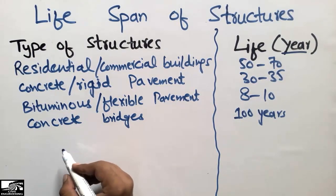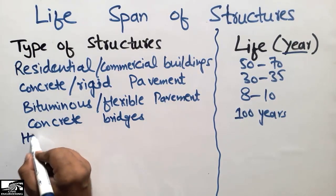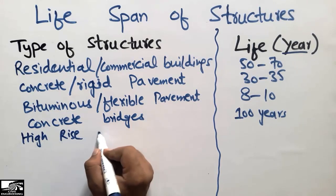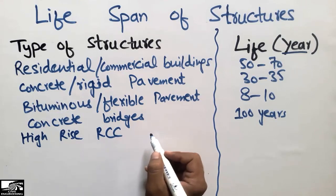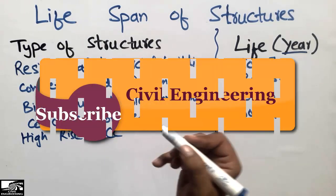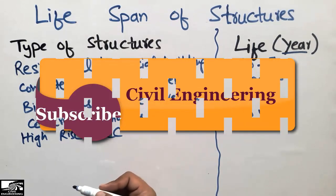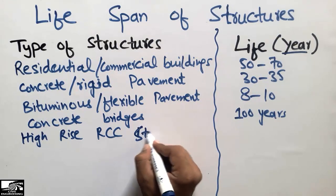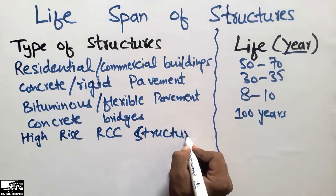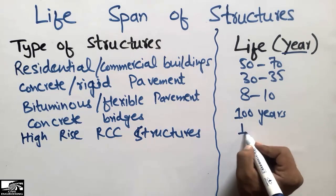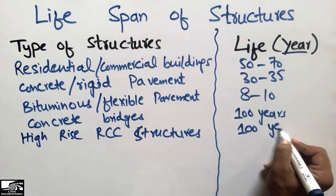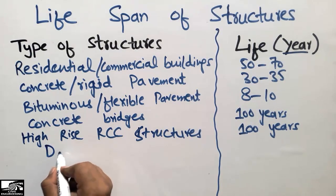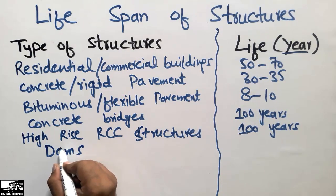High-rise RCC buildings — like the Burj Al Khalifa, Burj Al Arab, and other similar structures — also have a life expectancy of 100 years.